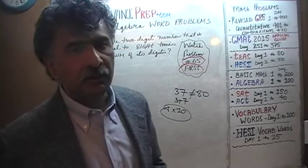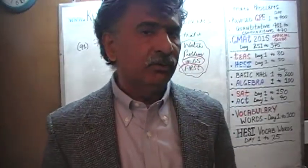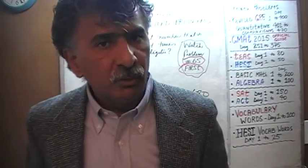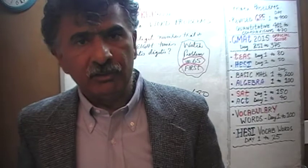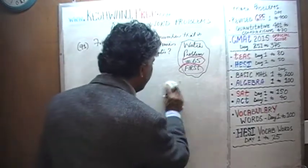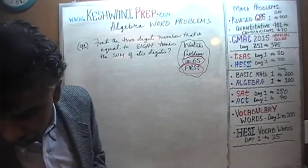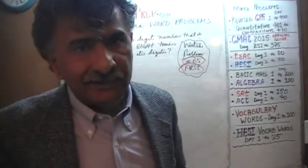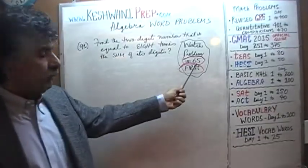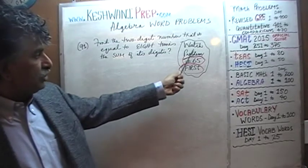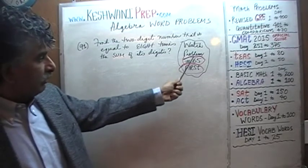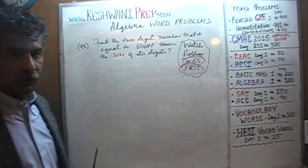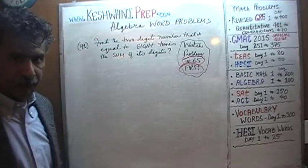Before we can begin the process, we have to first ask ourselves: how do we represent the notion of a two-digit number in the language of algebra, using algebraic notation? This is something that we learned in problem number 65, so it is important that you watch problem number 65 first before continuing with this one.